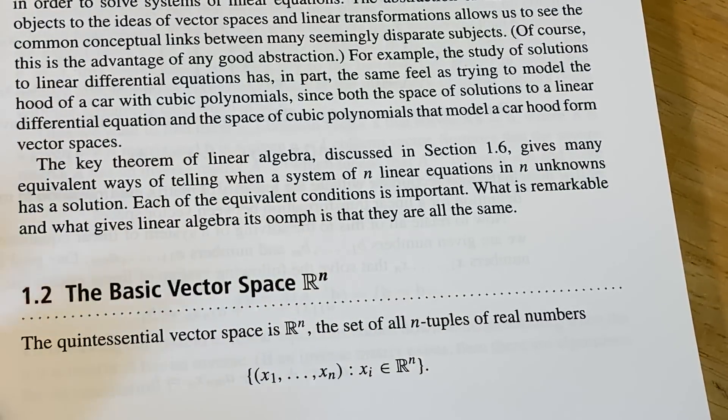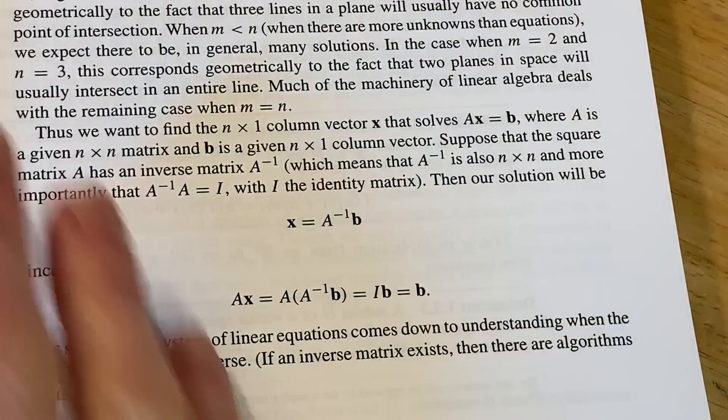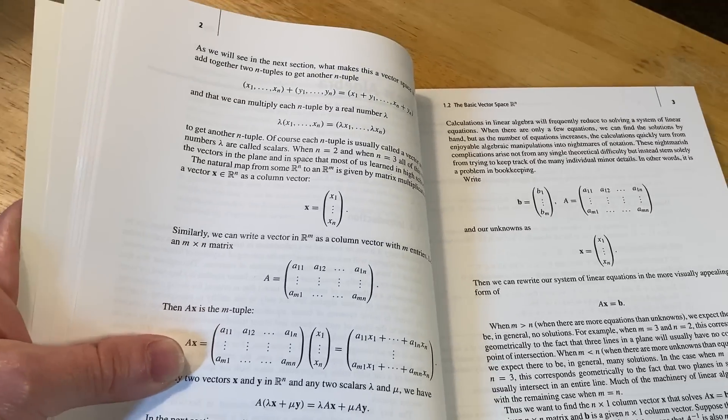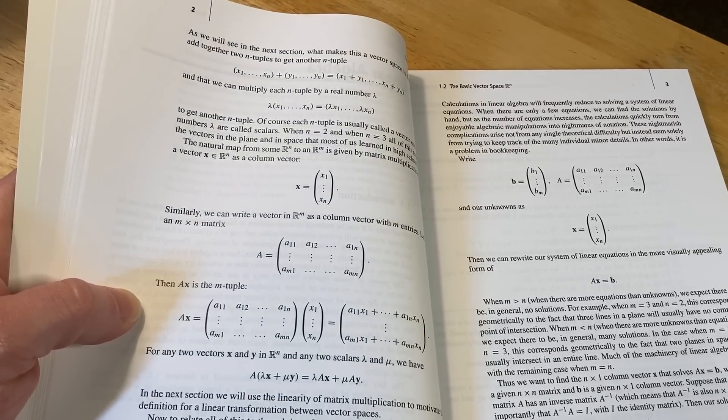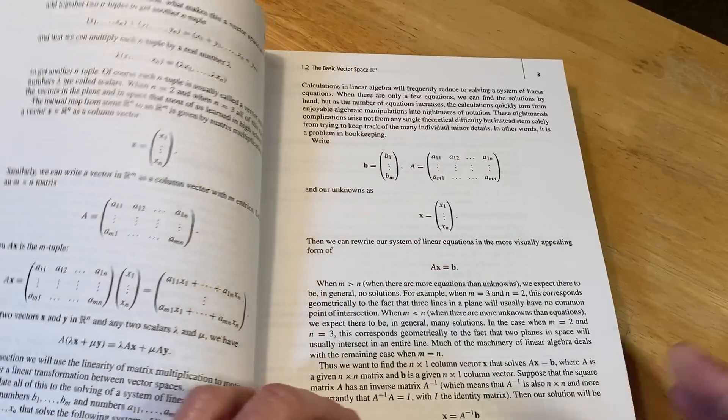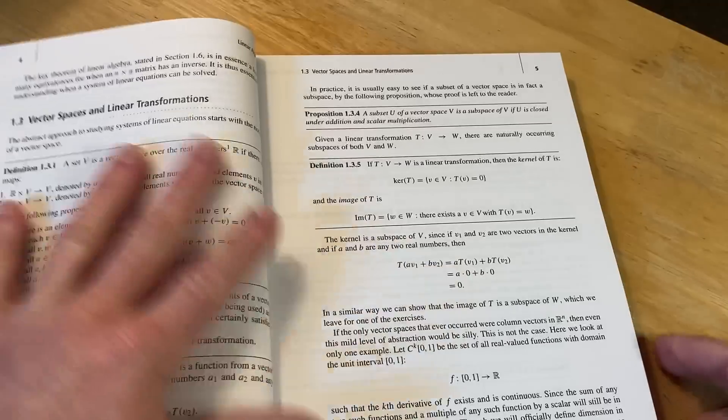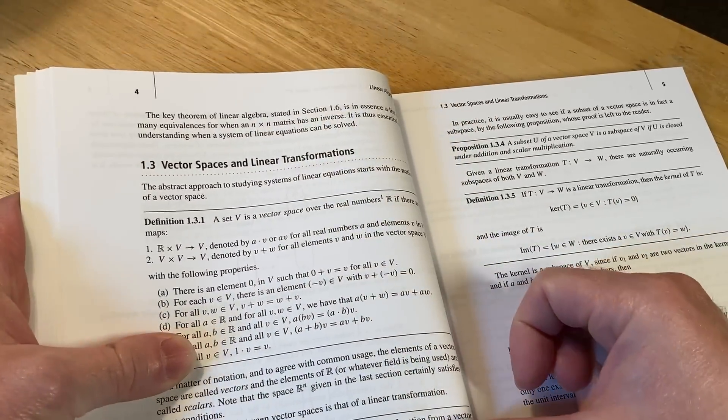So here it talks about the vector space R^n. And it actually teaches you the mathematics. So now it's not like super in-depth. You're not going to come out of this being like a rock star, but it's good knowledge. I really like this book. I think it's a wonderful book. And the audience, I mean, I think if you know some math, you can buy this book and read it and learn. The more you know, the better. Here he talks about vector spaces and linear transformations.